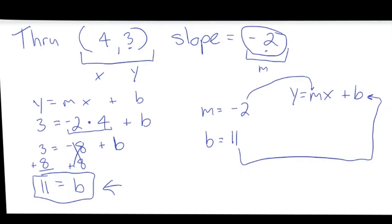So y is equal to negative 2x, don't forget that x, plus 11. And that is how you find the equation of a line when you're given a point and the slope.